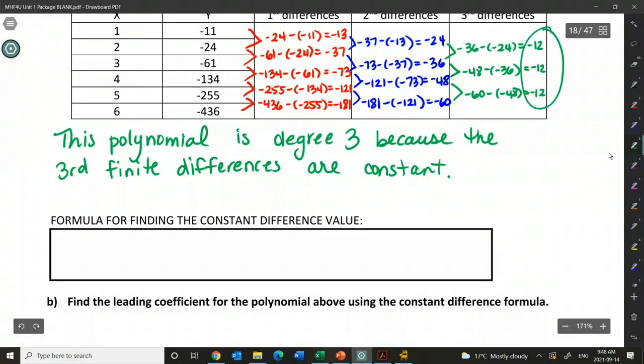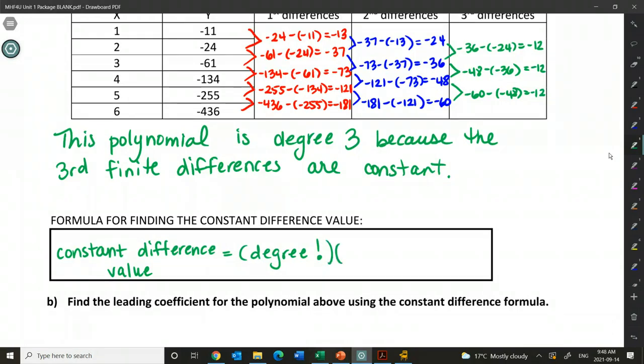So here's the formula. The constant difference value, which is this value, the one that is constant in the column, so constant difference value is equal to degree, and then this is a math symbol, so it's like an exclamation mark. I'll talk about that in a second. It's called factorial, degree factorial, times the leading coefficient. So if I know degree, and I know the constant difference value, I can find leading coefficient. Or if I know constant difference value, and I know the leading coefficient, I can find degree. If I know any two, I can find the third.